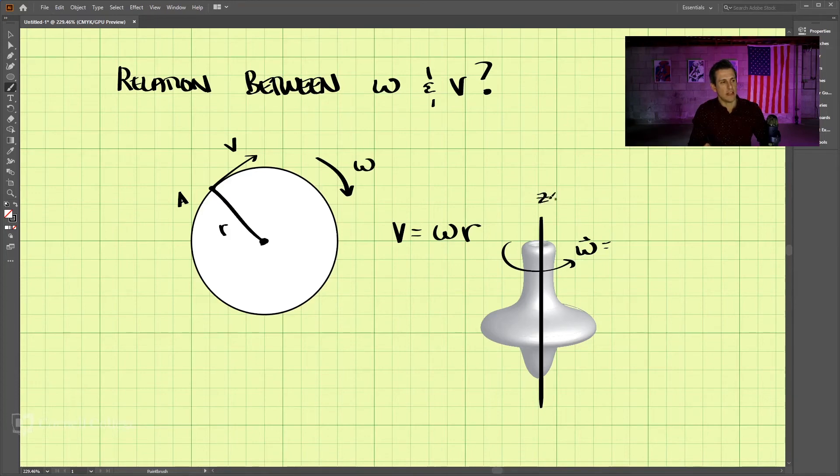Omega is, if this is the z-axis here, omega is around the z-axis. So we would write this as some quantity, some scalar, times k, right? This k means around the z-axis. So some angular velocity around the z-axis.